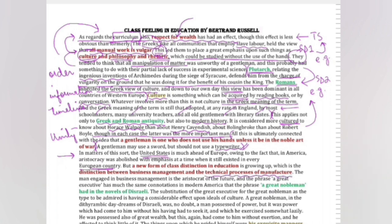But a new form of class distinction in education is growing up which is the distinction between business management and the technical process of manufacture. Yeh wohi cheez hai jous ne upar kaha tha ki jo manual work hai usse vulgar samjha ja raha hai. So this is the manual work and then we have business management so yeh wo brain work hai jis ki baat ho raha hai. The man engaged in business management is the aristocrat of the future and the phrase a great executive - look how he has emphasized this phrase.